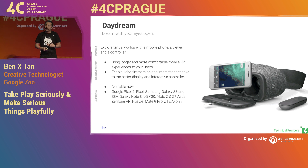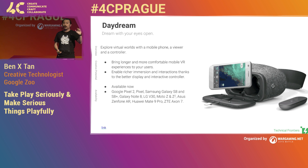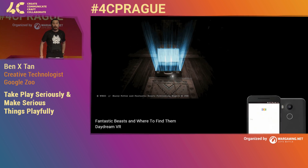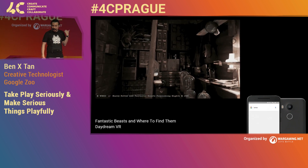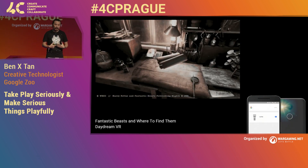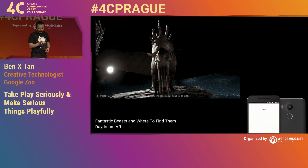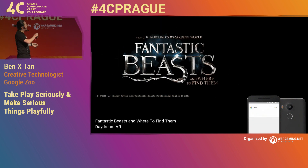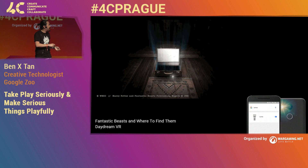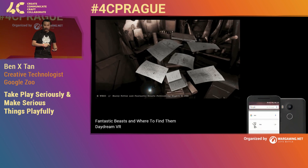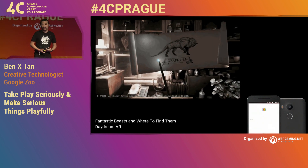One example of work from Google Zoo using the Daydream was for Fantastic Beasts — a campaign that started at Google Zoo and became a big VR experience. They also had an integration with Google Assistant where if you said magic spells from Harry Potter, like 'Lumos,' the flashlight on your phone would turn on. That was a very bespoke first-party integration into Google's platform.